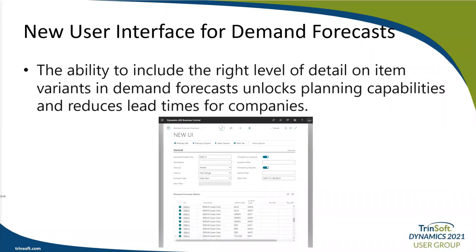There's now a new user interface for demand forecasts. Accurate demand forecasting gives businesses valuable insights into their market position, helping decision makers shape strategies for pricing, business growth, and market potential. Item variants let you keep your list of items under control, especially for items that vary only in attributes like color. With this 2022 Release Wave 1, you can define the right level of detail in the forecast using location and variant fields in the demand forecast overview page. Existing customers must activate the new experience in the feature management page.